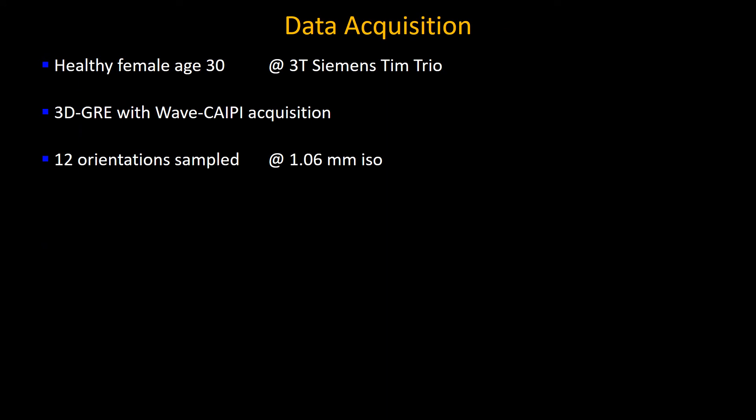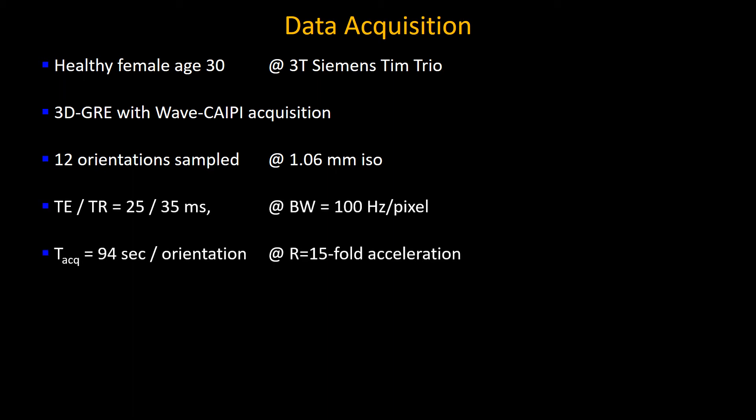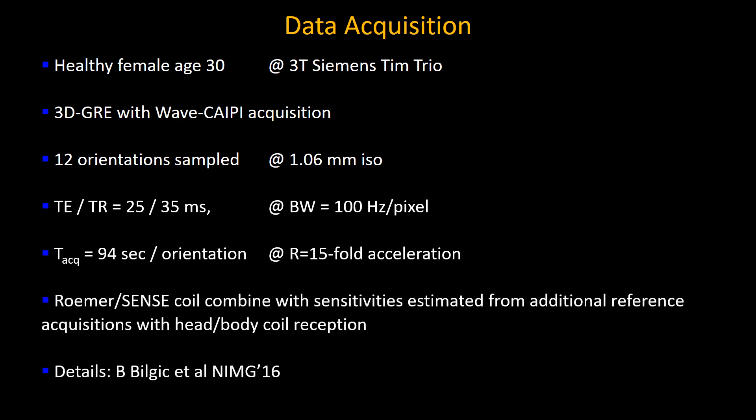For this dataset, a healthy female was scanned at a 3T system using WAVE-CAIPI acquisition, and 12 orientations were sampled at about 1.1 mm isotropic resolution. We used long echo time to provide high phase contrast, and each head orientation took about 90 seconds at 15x acceleration. We used ROEMER coil combination for optimal SNR in the combined complex signal, and further details can be found in the referenced publication.